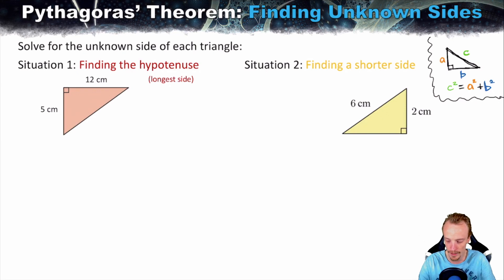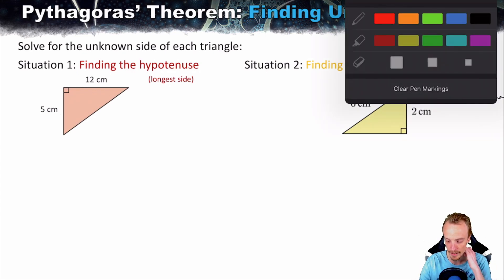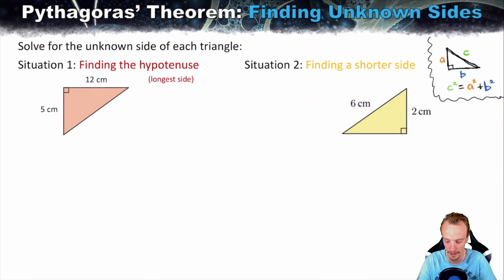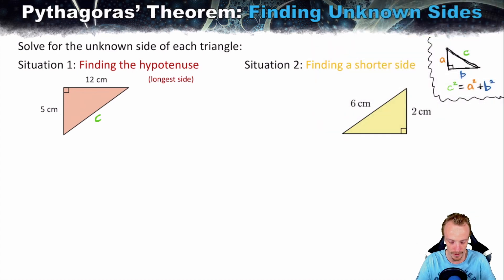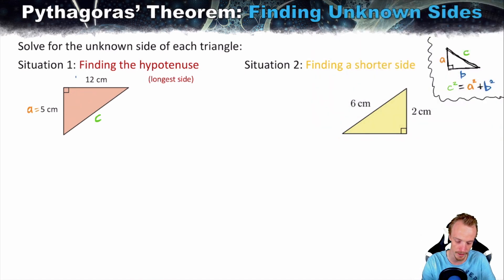Step one is to label the right angle triangle. What we label as C is very important — C has to be the hypotenuse, the longest side. Over in the top right is a reminder of what Pythagoras theorem is. We also need to label the two shorter sides. It doesn't matter which side you label as which, so I'll label A as this one and B as this one.